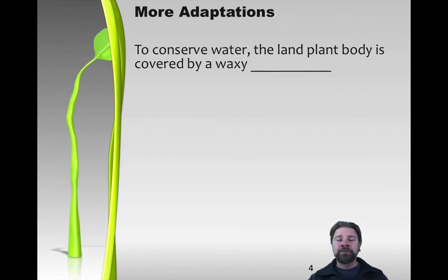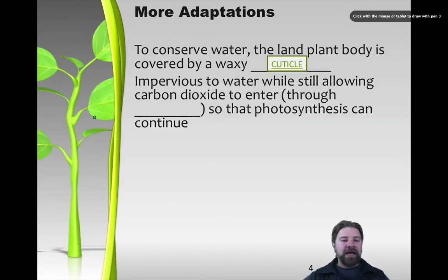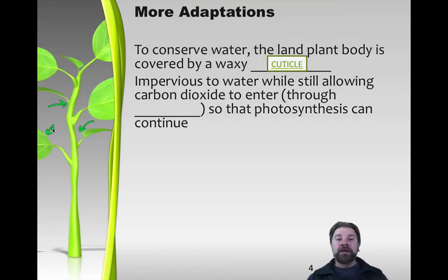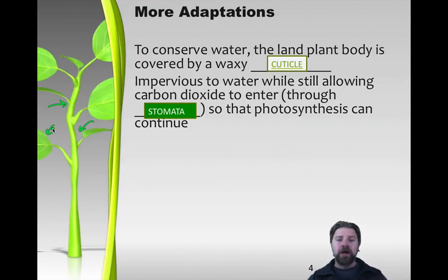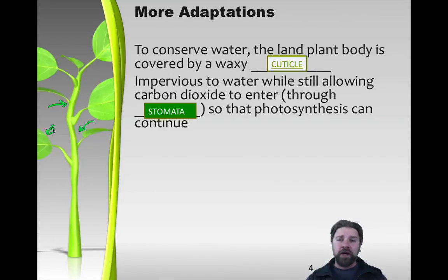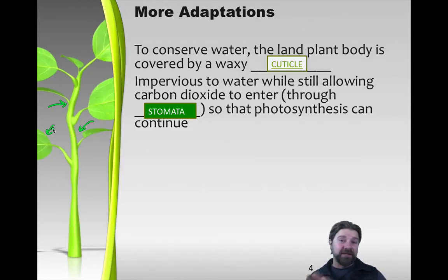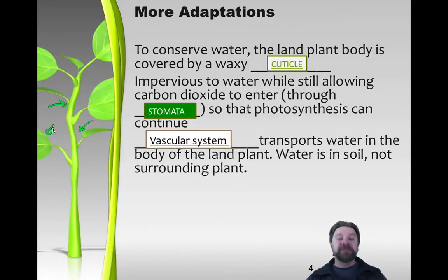Some adaptations we see in terrestrial versus aquatic plants: first, the plant body is covered by a waxy cuticle. On the outside of the green parts of the plant there is a hydrophobic exterior that blocks water from going in and out. There are certain small parts that allow water and gases to go in and out called stomata - the little holes typically found on the underside of leaves, protected by two guard cells shaped like kidney beans that can open and close. Photosynthesis is helped by those stomata because when they open, it allows carbon dioxide to enter.